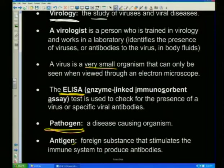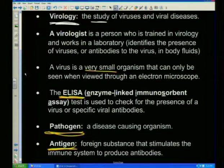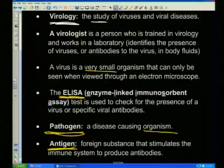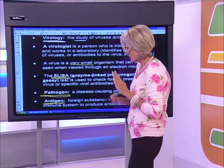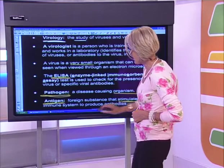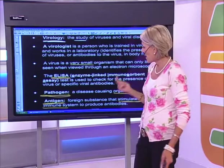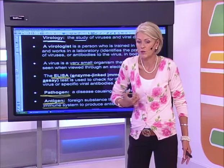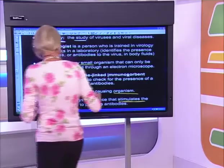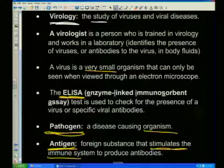You must know what a pathogen and an antigen are. A pathogen is a disease-causing organism — anything that's going to make you sick. An antigen is a foreign substance that stimulates the immune system to produce antibodies. If you were infected with a flu virus, the flu virus itself would be a pathogen. But because it's foreign to your body and makes you produce antibodies, we also call it an antigen. It's anti-you, so it's an antigen.